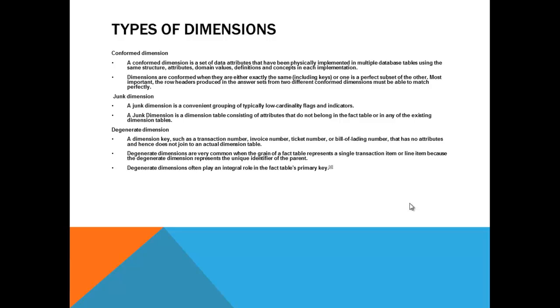A dimension key such as a transaction number or invoice number, ticket number or bill of landing number that has no attribute and hence does not join to the actual dimension table is called as a degenerate dimension. What he is saying is at an invoice level under that you may have number of items in it. But if you are not able to join them to a particular dimension table because we are not going to maintain this dimension at that lowest level to the item and also to the line of the product.